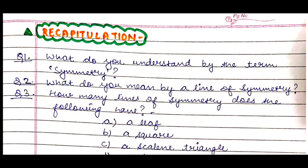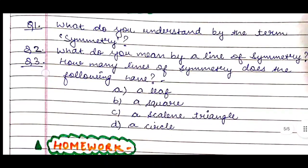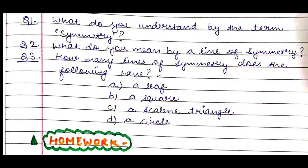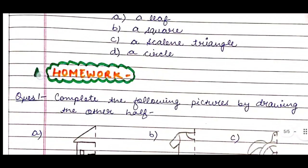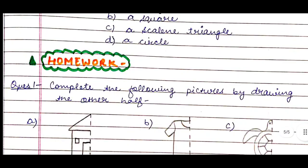After the teaching part comes recapitulation, where the teacher asks questions to check whether students have understood. First: what do you understand by the term symmetry? Second: what do you mean by a line of symmetry? Third: how many lines of symmetry does each of the following have — a leaf, a square, a scalene triangle, a circle?